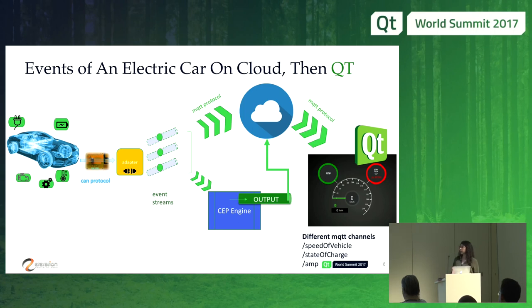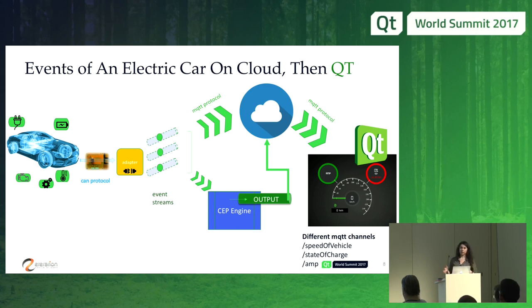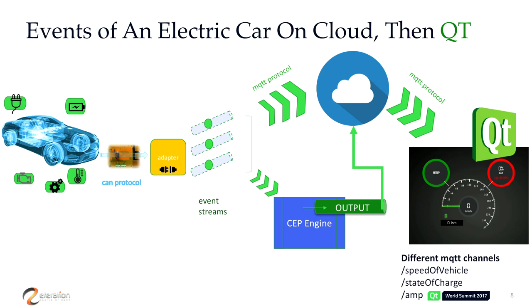In this dashboard we subscribe to the speed of vehicle, state of charge channels, and some other ampere meter channels. We display the real-time car information to the user via the Cloud platform. You can also retrieve this information not only from the dashboard but from another platform as well.